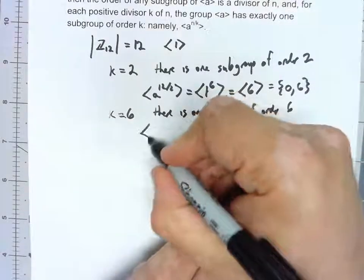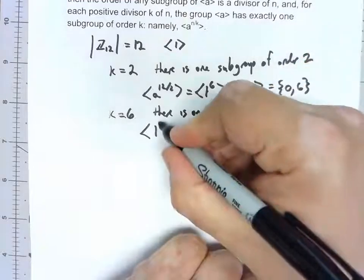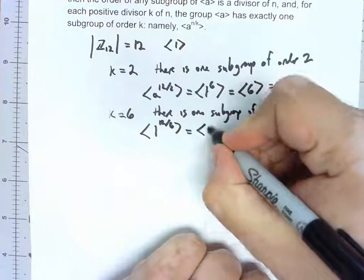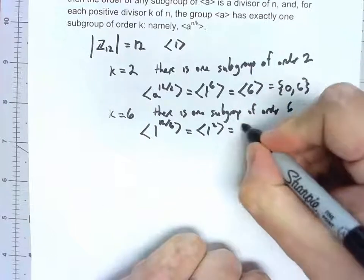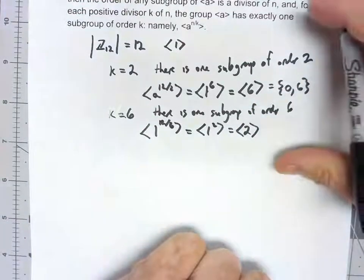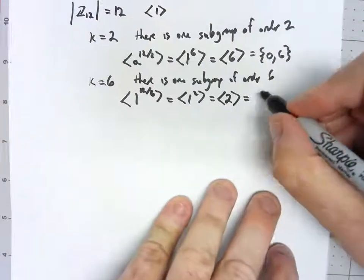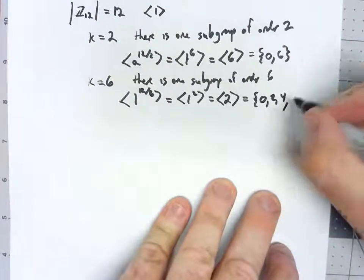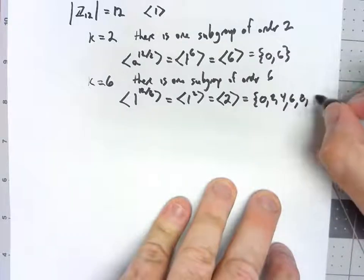And that would be subgroup generated by 1 to the 12 over 6, 1 squared, because the operation's addition, it's 2. And so that gives us the set 0, 2, 4, 6, 8, 10.